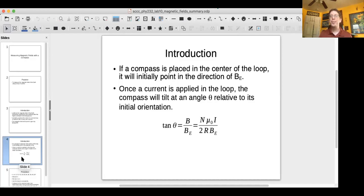The tangent of theta is equal to the coil's magnetic field divided by the Earth's magnetic field, and that's equal to N mu naught I divided by 2 times R times the Earth's magnetic field.